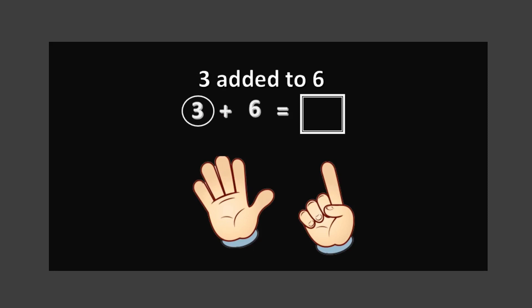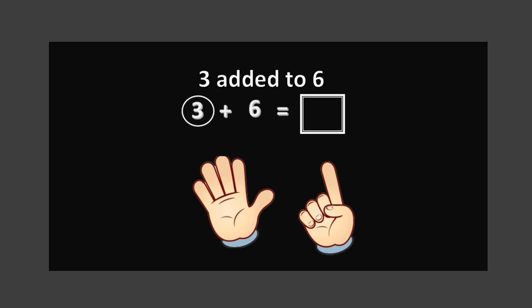For the last question: three added to six. Remember to use the counting on method. The first addend is three, so count on six from there. What comes after three? Four — count on: four, five, six, seven, eight, nine. Three plus six equals nine. Mashallah, you have done a wonderful job today! Give yourself a big clap.